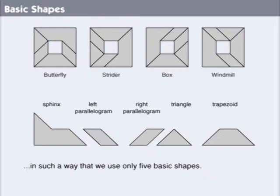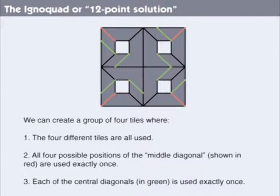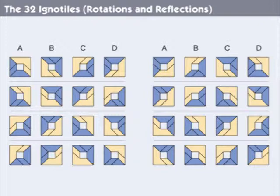Eventually, I called the set of four different partitions the four ignotiles. The four ignotiles could be arranged into a two-by-two array following another rule. I used each tile once, and I enumerated the diagonal lines so that twelve of them would be unique over the array. Tiles in each group could be permutated into twenty-four different orders. This twelve-point solution, or igno-quad, of four tiles, allowed me to place rotations and reflections of the tiles into eight different groups.